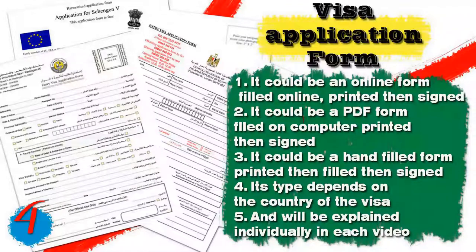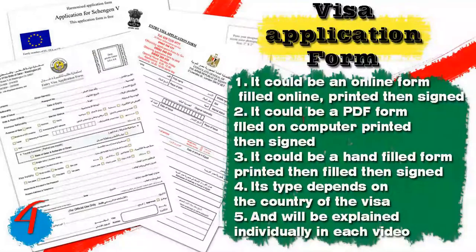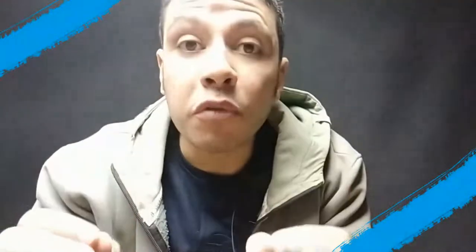Number four, you will need visa application forms. It could be an online form filled online, printed, then signed; it could also be a PDF form filled on a computer, printed, then signed; and it could also be a hand-filled form printed then signed. Its type depends on the country of the visa and will be explained individually in each video.